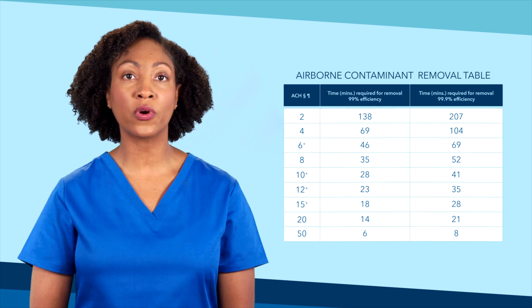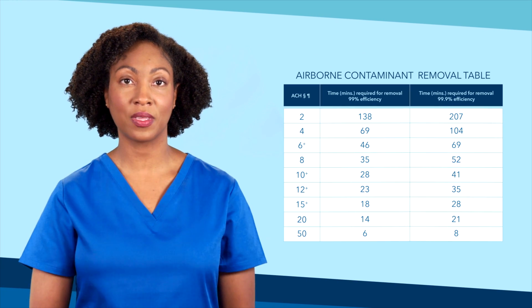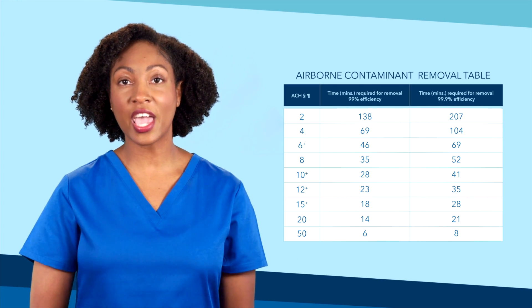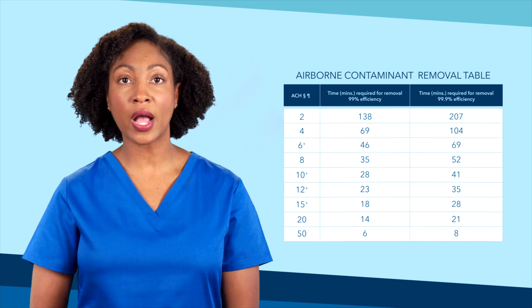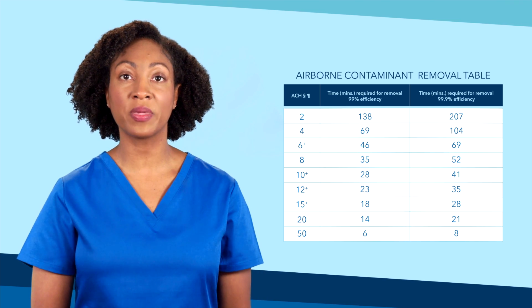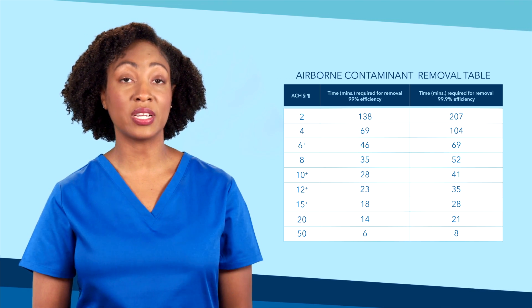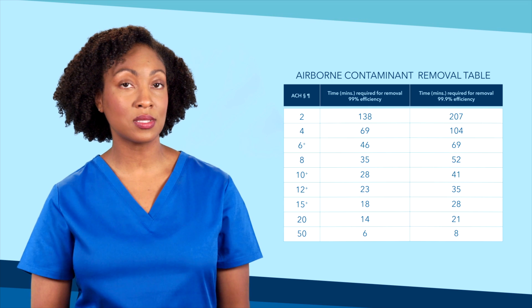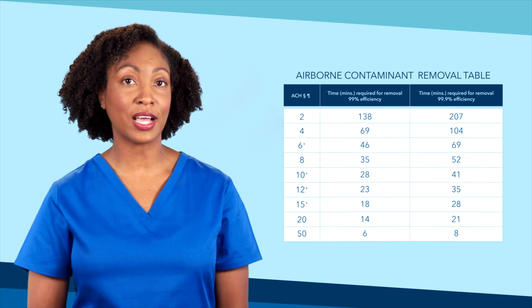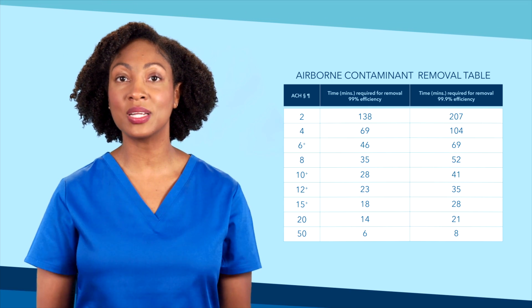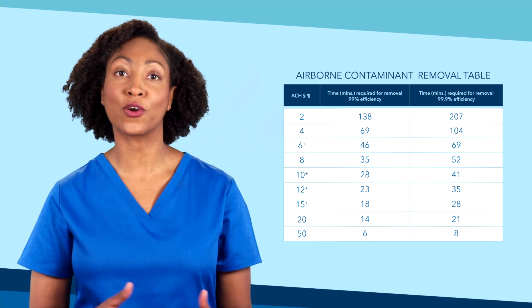To help protect staff from entering an AIIR room too soon after an infectious patient is discharged, the CDC published the Airborne Contaminants Removal Table. This table looks at the air changes per hour in the room and identifies how much time is needed before 99% and 99.9% of the contaminants in the air are removed.